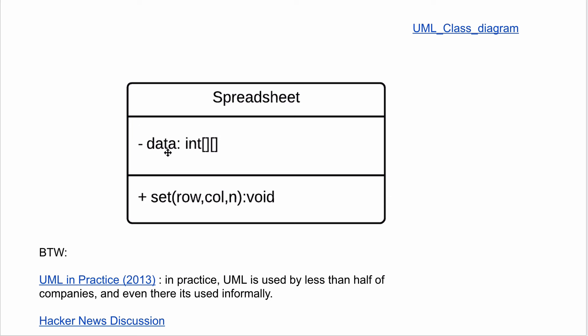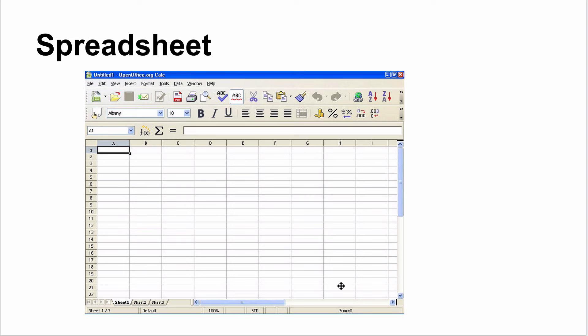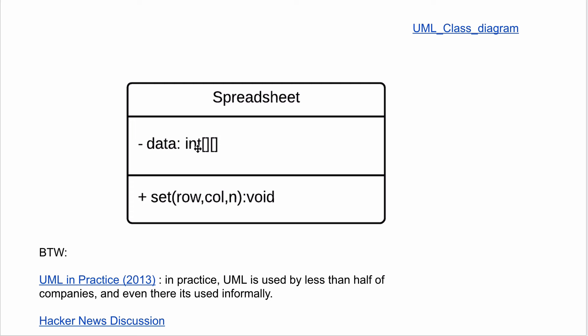You need a method to put numbers in that two-dimensional array. Start simple — a spreadsheet is mostly just a two-dimensional array of integers. You draw it out using a UML class diagram, which you use here to architect the system. But you don't stop there — you immediately realize it's not just integers; it's also doubles, decimal points, and formulas.